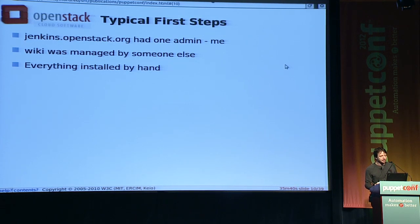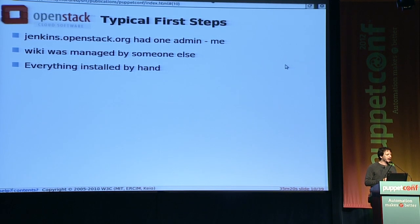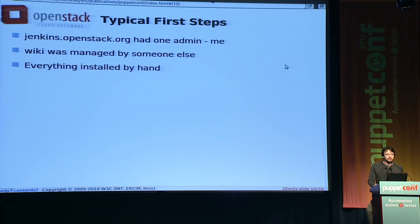Jenkins had one admin. We had a wiki managed by somebody else, and another server with an IRC bot and channel logging that they ran without even telling me. Everything was installed by hand by various people. On machines not managed by me, there were like 20 or 30 people who had root access and would just shell in and do things. One day somebody would say the wiki's down, and I'd be like, I don't even know how to log into the wiki.